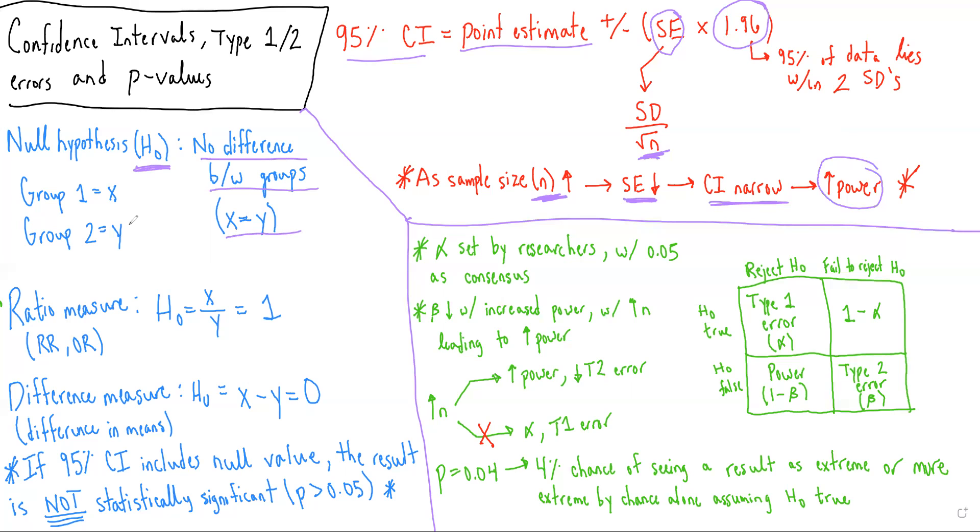So for example, if we have a study where we're comparing a placebo to some new therapy to reduce risk of some disease, the null hypothesis is that the treatment doesn't work. And the burden of proof is put on the investigator to reject that null hypothesis in favor of a potential alternative hypothesis that the treatment is better or worse than placebo.